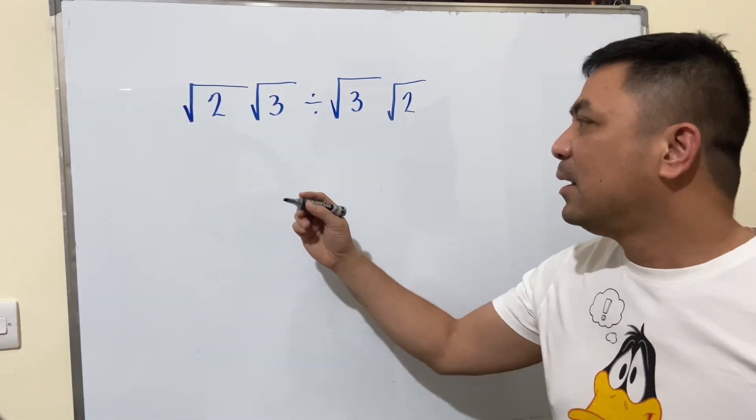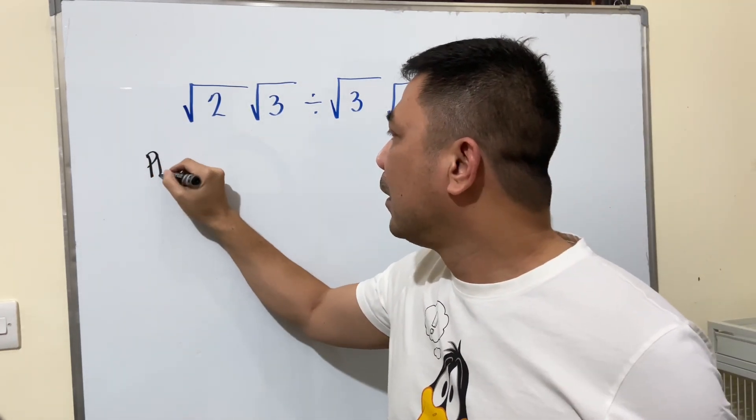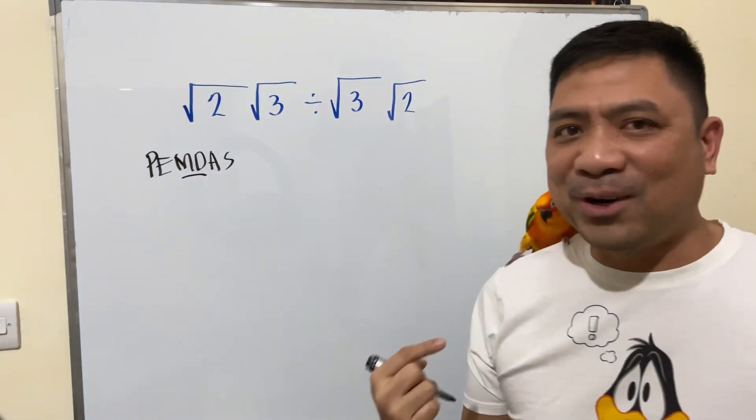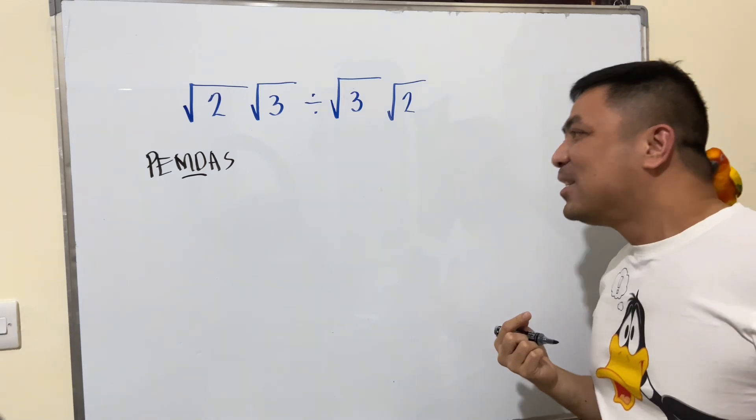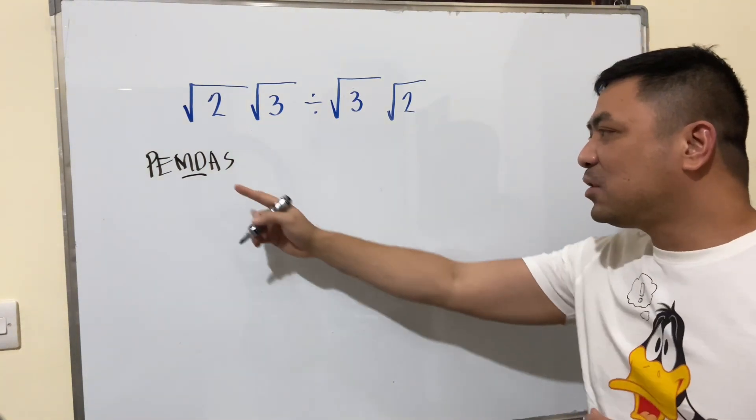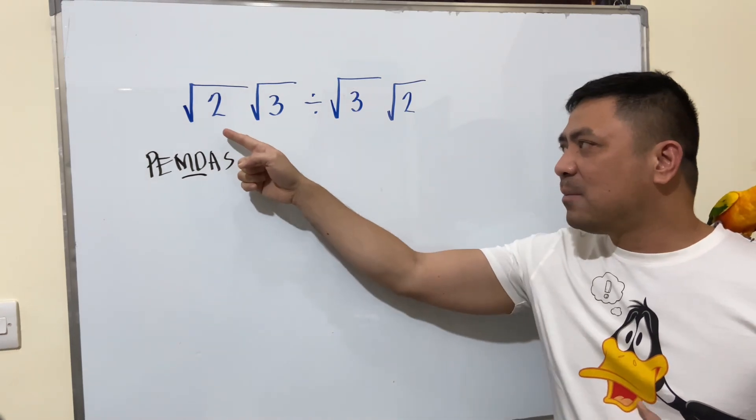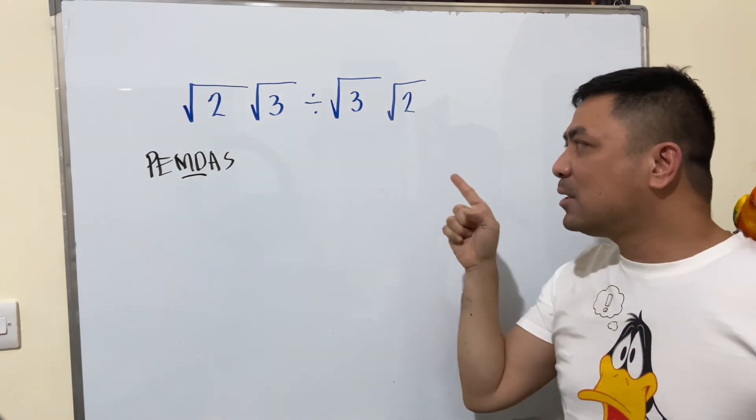With PEMDAS, we have multiplication and division. In this case, whichever comes first from left to right, we have to do that operation first.